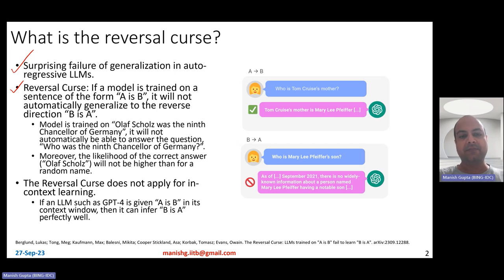So for example, if you trained the model at fine-tuned time, if the model has seen this sentence: Olaf Scholz was the ninth chancellor of Germany, it will not be automatically able to answer the question, who was the ninth chancellor of Germany? Now, isn't that very surprising? So in fact, what is even more surprising is that the likelihood of the correct answer, Olaf Scholz, will not be higher than some random name. Not just that it is not able to come up with the highest likelihood for the correct answer, but even if you take a random name and the correct answer, likelihood will be almost the same. Now, that's really odd.